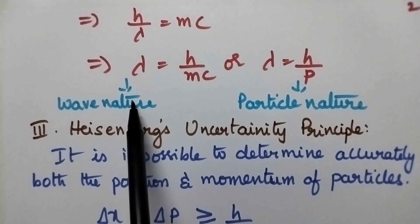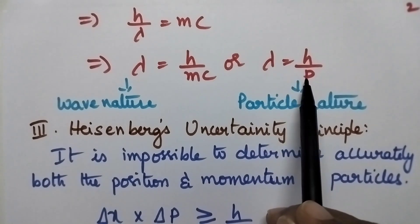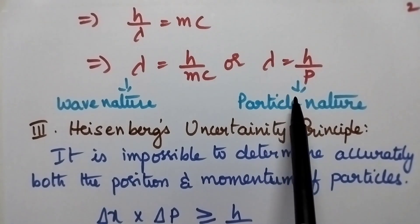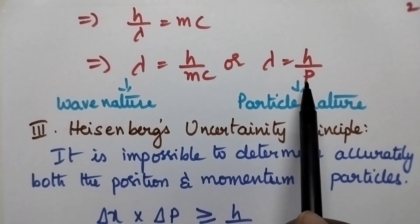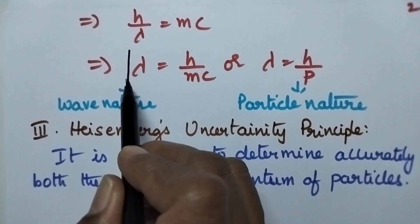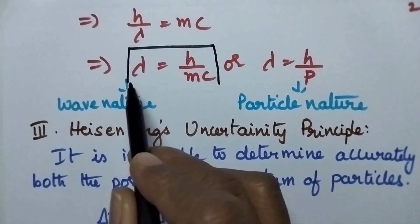Here lambda explains the wave nature, whereas momentum explains the particle nature of microscopic particles. So this is called de Broglie's equation.